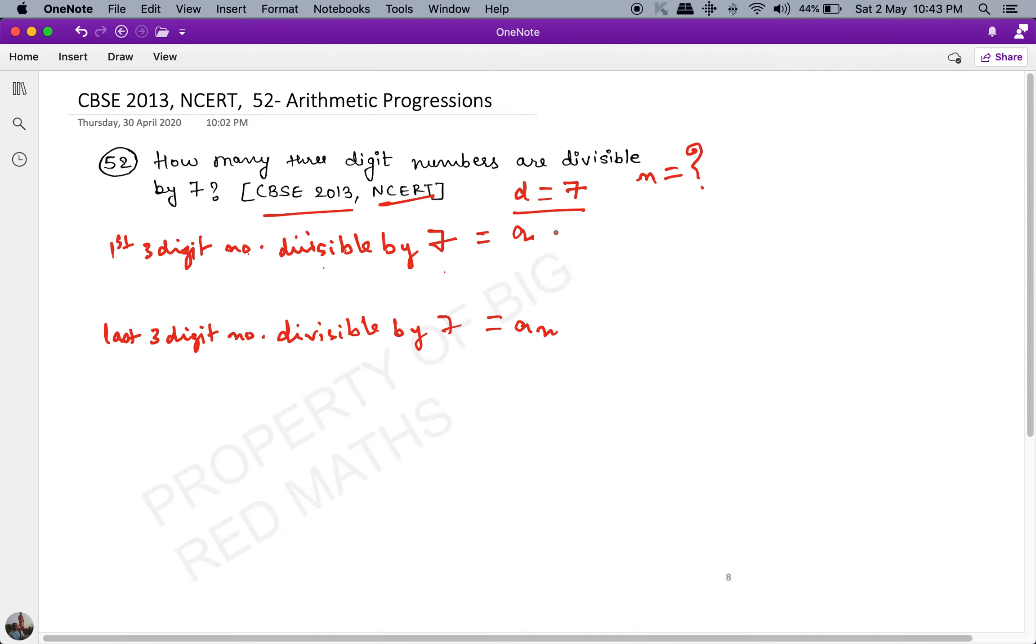This equals a. Let's start from 100. Is 100 divisible by 7? No. 101 by 7? No. 102, 103, 104... 105 by 7? Yes, 15 × 7 = 105. So a = 105. Similarly, let's find the last three-digit number divisible by 7.